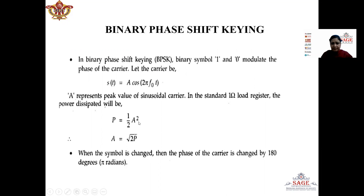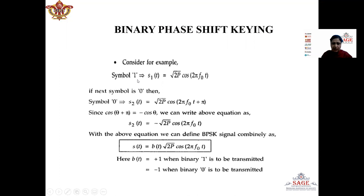Here A is the peak value of the sinusoidal carrier. When represented in terms of the power of the signal, power P equals A squared divided by 2, or A equals root 2P. So when symbol is 1, the modulated signal S₁(t) is given by root(2P) cos(2π f₀t). Whereas when the symbol is 0, the modulated signal S₂(t) has a phase shift of 180 degrees, so S₂(t) equals minus root(2P) cos(2π f₀t).